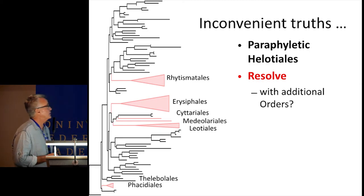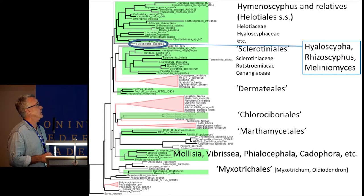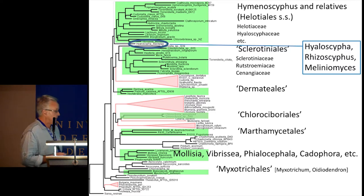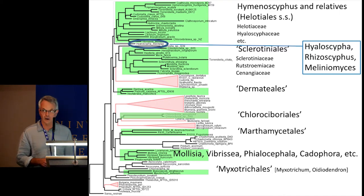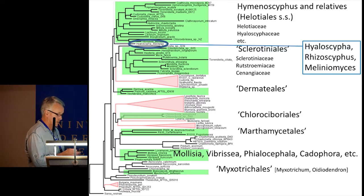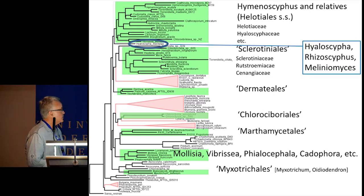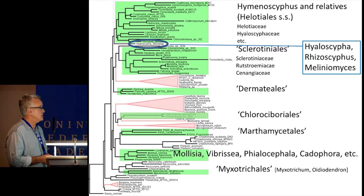So how could you resolve that? You could propose a bunch of additional orders, which might look something like this based on the current phylogeny: a Helotiales in the strict sense, plus things like Sclerotiniales, Chlorociboriineales, and so on. You get groups of genera like Mitrula, Vibrissea, Phialocephala, and Cadophora — genera which have never been placed in the same higher taxon — that are important to different scientific communities either as plant pathogens or as highly diverse, very common genera. These things are closely related, and it's important for the different scientific communities working on them independently to know that. A higher taxon of some sort would provide that information.